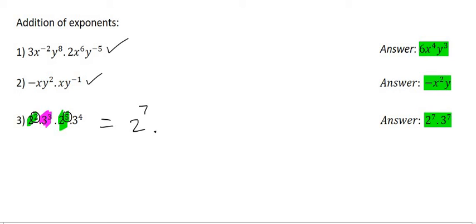Now we can look at the threes and that's three to the power of three and three to the power of four. We're not going to turn that into a nine. We're going to leave it as three because the bases stay the same and then we add exponents and that becomes three to the power of seven.